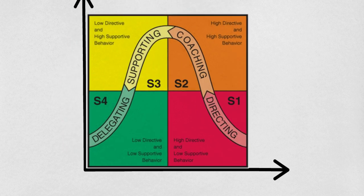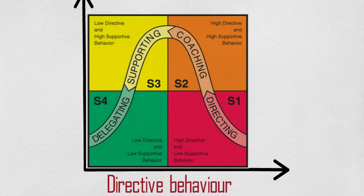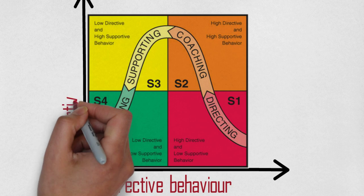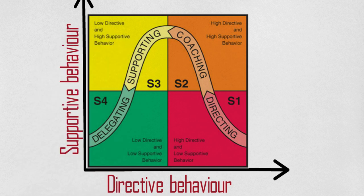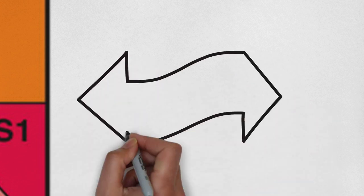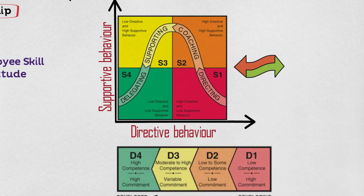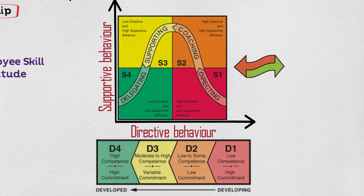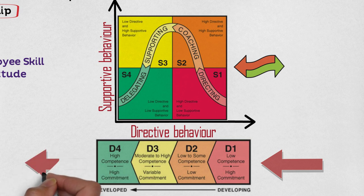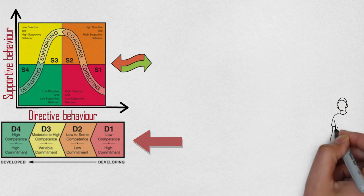My synopsis and basic explanation of this model is as follows. The x-axis signifies the degree of directive behavior the leader must exhibit — that is, the degree of one-way communication from the leader to the employee. The y-axis signifies the degree of supportive behavior the leader must exhibit, which is the degree of two-way communication between leader and employee. The development bar signifies the employee moving from right to left, becoming more competent and more confident.